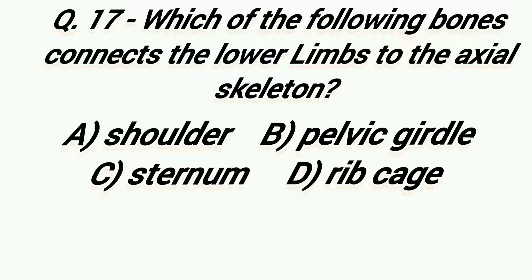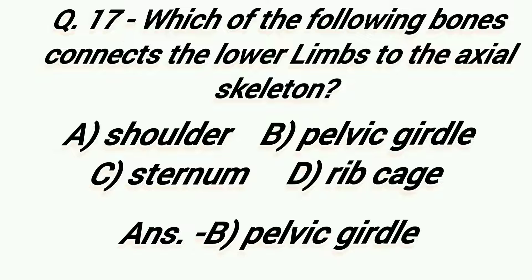Which of the following bones connects the lower limbs to the axial skeleton? Option A: Shoulder Girdle, Option B: Pelvic Girdle, Option C: Sternum, Option D: Rib Cage. Right answer is Option B, Pelvic Girdle.